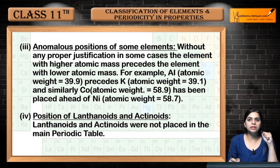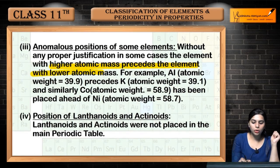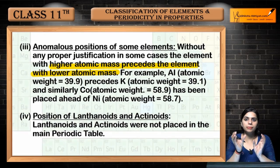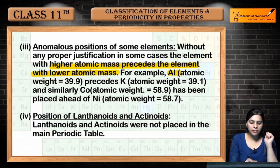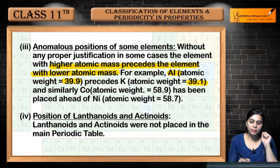The third defect is the anomalous position of some elements. In some cases, elements with higher atomic mass precede elements with lower atomic mass, which should not happen in increasing order. For example, argon has an atomic weight of 39.9 while potassium has an atomic weight of 39.1, yet argon precedes potassium.